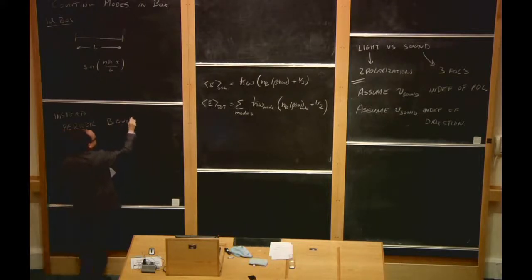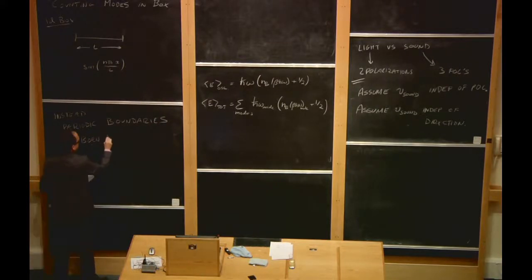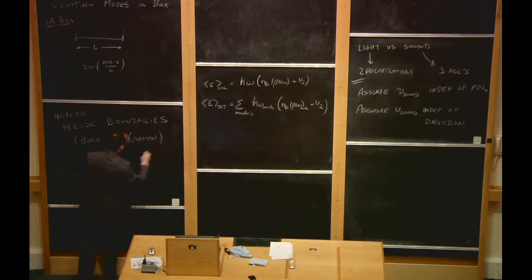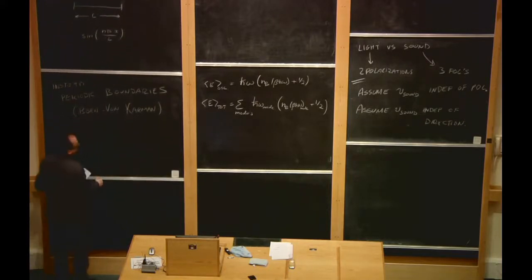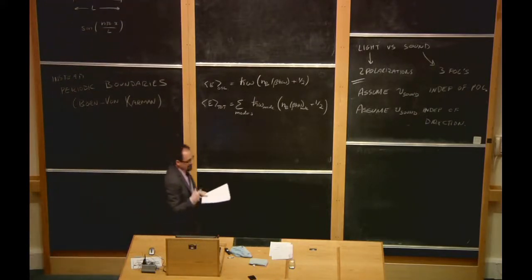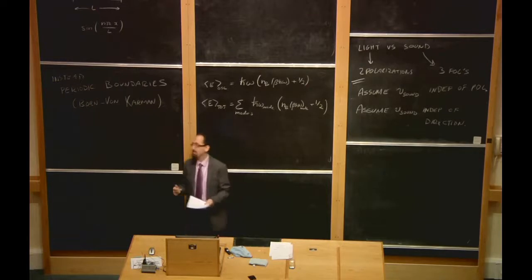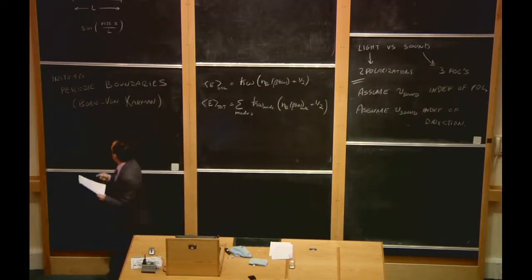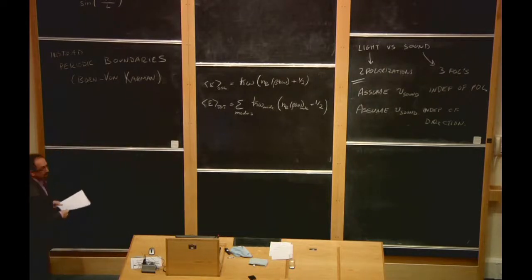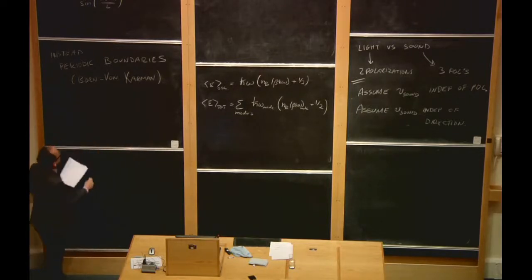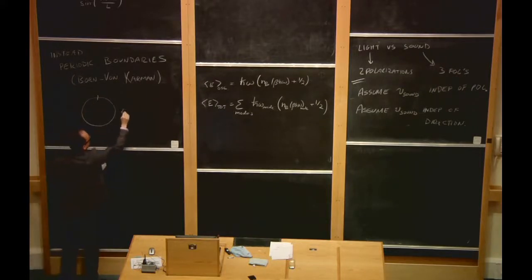Periodic boundary conditions, also known as Born-Von-Karman boundary conditions. Max Born was one of the creators of quantum mechanics, and Theodor von Karman was a very important mathematician. Max Born is also significant because he was Olivia Newton-John's grandfather — she's an important pop star. The idea is we take our box of length L and wrap it into a circle of circumference L, measuring x going around the circle.